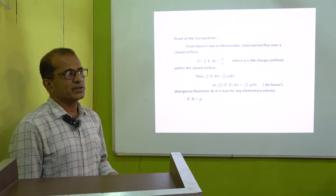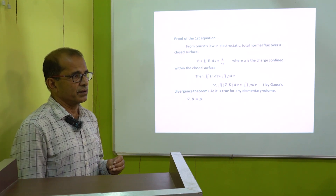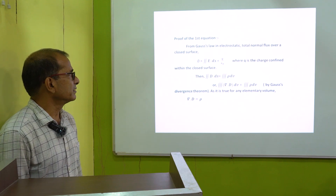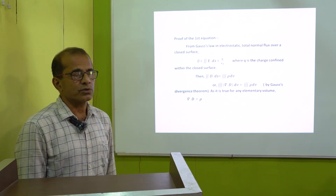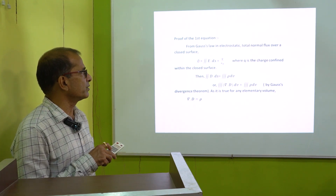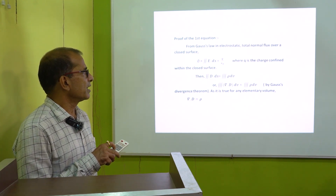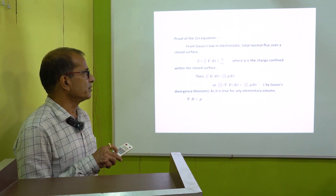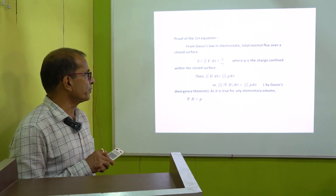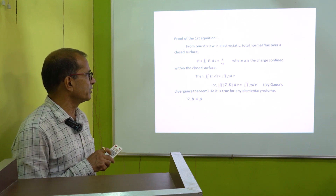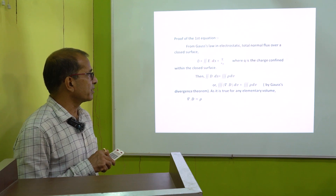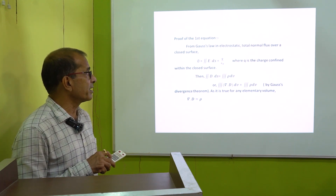Now we shall proceed step by step to prove these equations. Proof of the first equation: from Gauss's law in electrostatics, we know the total normal flux phi equal to ∮E·dS equal to Q/ε₀, where Q is the charge confined within the closed surface. Now if we multiply by ε₀, we shall get the electric displacement vector. Then from the above equation, we get ∮D·dS equal to ∫ρ dV.